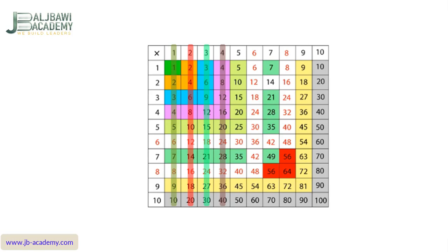Now, the multiplication table of 5. All students like it because it is easy to remember — it ends with 5 or 0: 5, 10, 15, 20, 25. It ends with 5 or 0, so it is very easy to remember. So we cross the multiplication table of 5.